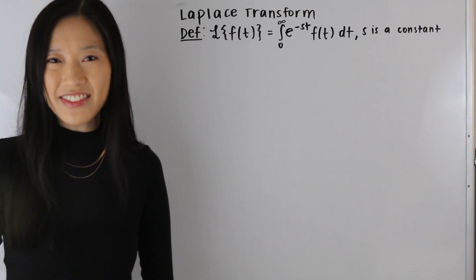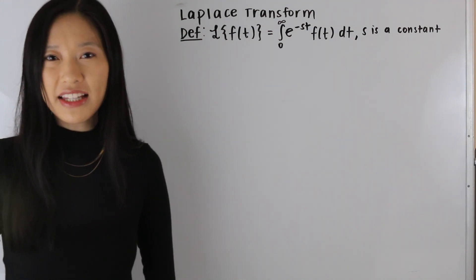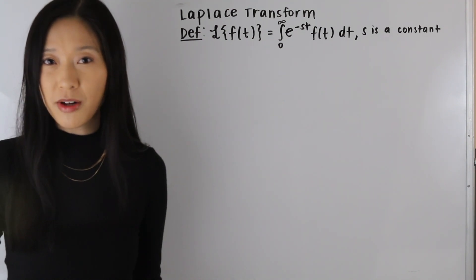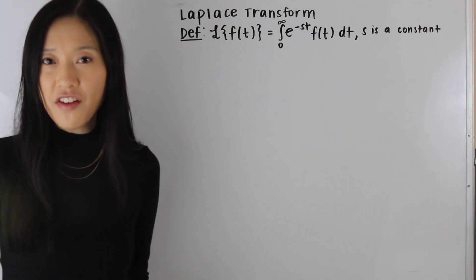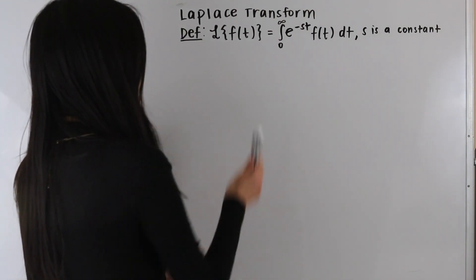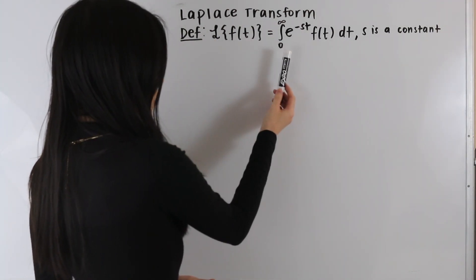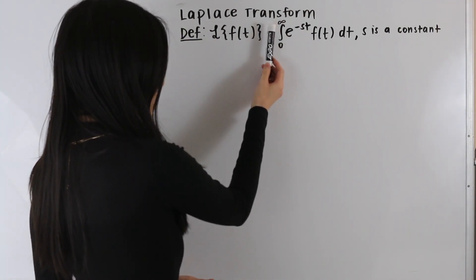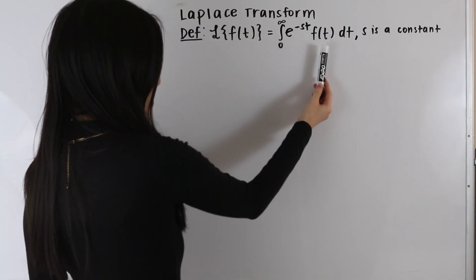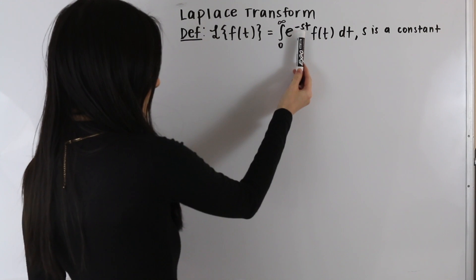Hey guys, Shanine here, and in today's video we are going to be learning how to find the Laplace transform of a function using the definition of the Laplace transform. The definition tells us that the Laplace transform of a function f of t is equal to the integral from zero to infinity of e to the negative st times f of t dt, where s is a constant.